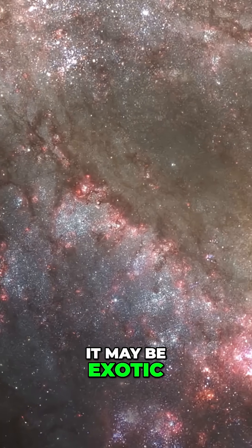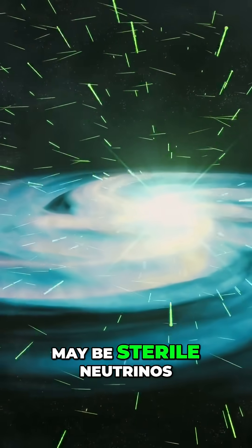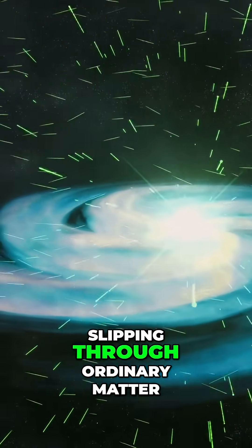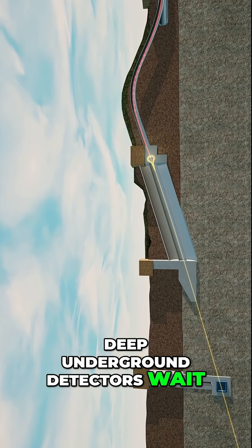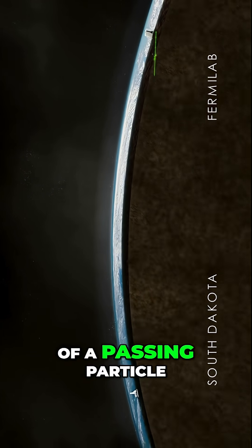It may be exotic particles from the dawn of time. Wimps, actions, may be sterile neutrinos, slipping through ordinary matter like ghosts. Deep underground detectors wait for the faintest sign of a passing particle.